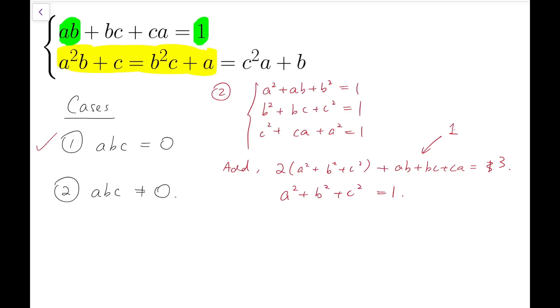So that means this expression equals this expression. a² + b² + c² equals ab + bc + ca. Now from this we can tell that a, b, c are all equal.